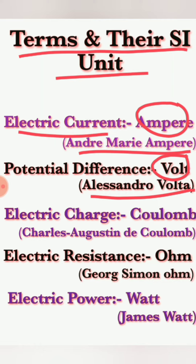Next is electric charge — the flow of this charge constitutes electric current. This charge is measured in a unit called coulomb, named after the scientist Charles-Augustin de Coulomb.